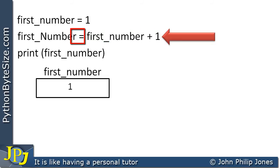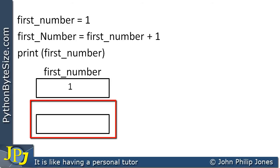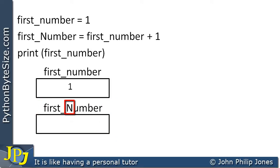Now that two will be assigned to this variable here, first_Number, but this is a different variable. What Python will now do is generate that variable, give it the name first_Number, but note the capital N.